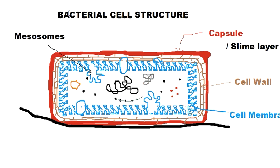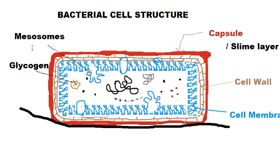Another thing visible inside the bacteria are storage granules. Bacteria, being living organisms, store food in case of shortage. One storage structure contains glycogen — the polymerized form of glucose. When glycogen is broken down, a lot of glucose is released, meaning a lot of energy. Another storage product found in bacteria is red granules visible on screen, which are called volutin granules.